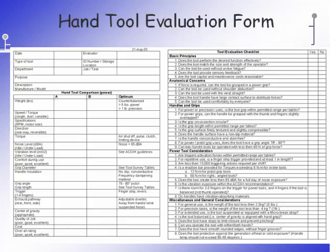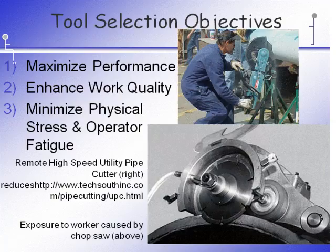On Moodle, there is a hand tool evaluation form, which is the one you see here. These are based on sound ergonomic principles and the ACGIH guidelines for hand tool selection and vibration exposure. You can print it off now and follow along with the lecture. Most of these items are covered, although not necessarily in the order shown, and you'll later be using this tool to evaluate a hand tool for one of your learning assessments.